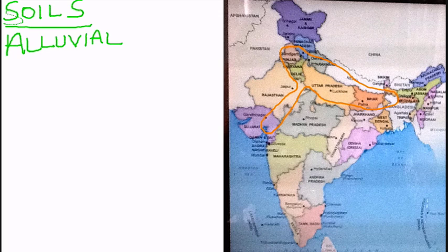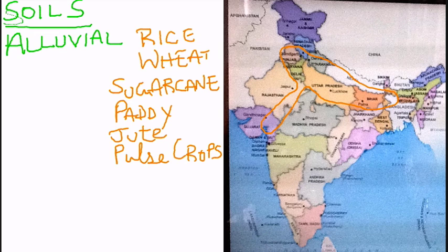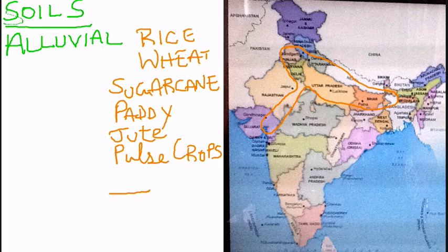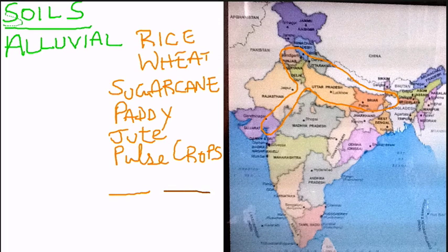The crops grown in this alluvial soil are rice, wheat, sugarcane, paddy, jute, and pulse crops. This soil covers about 15 lakh square kilometers, and its color ranges from light to dark brown.